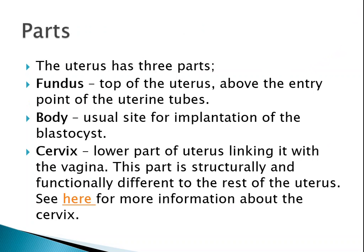There are mainly three parts of the uterus: the fundus, the body, and the cervix. The fundus is the top, dome-shaped area above the entry point of the uterine tubes. The junction where the uterine tubes attach to the uterus is known as the cornua.